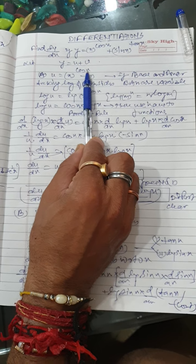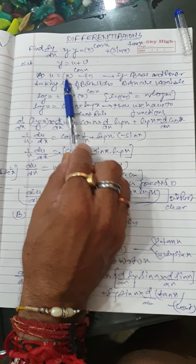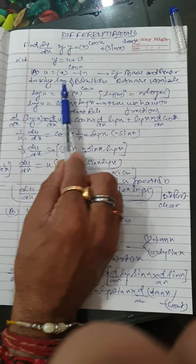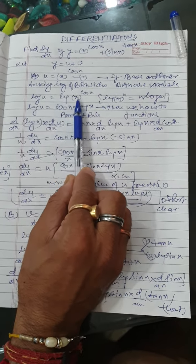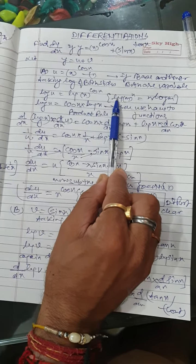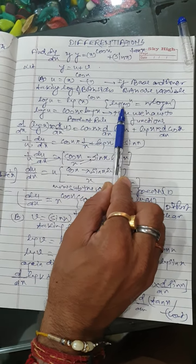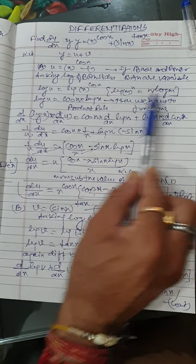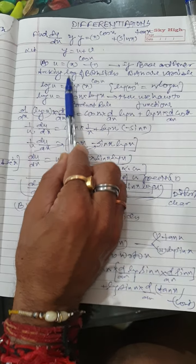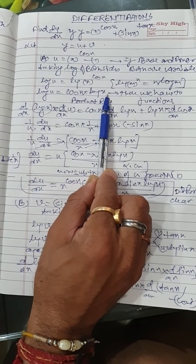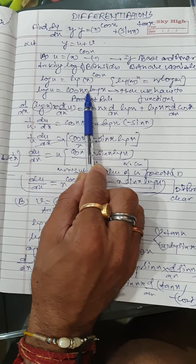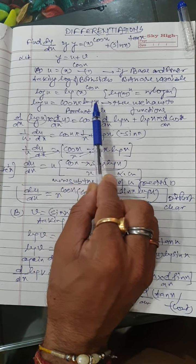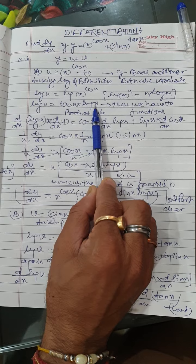By taking log of both sides, on the left hand side we get log u is equal to log of x raised to the power cos x. By the logarithm theorem, log m raised to the power n equals n log m, so it becomes cos x into log x. On the right hand side we have two functions: cos x and log x.